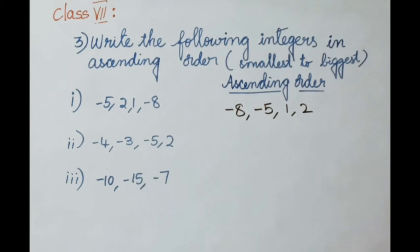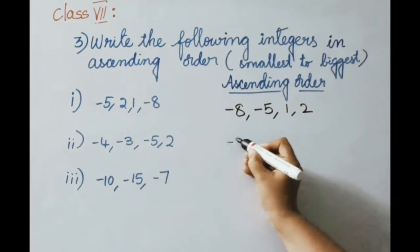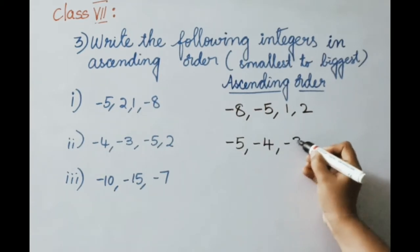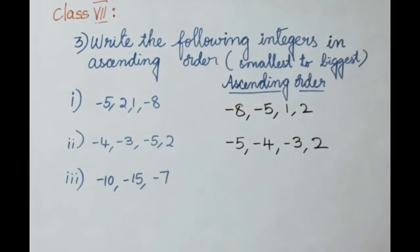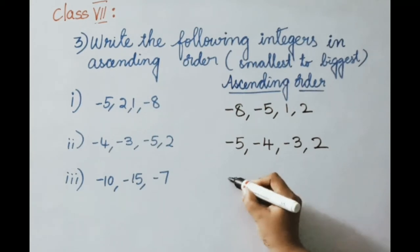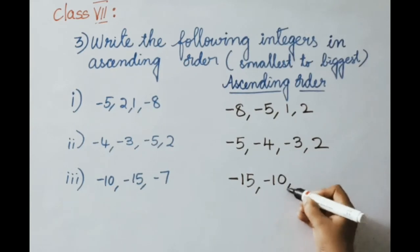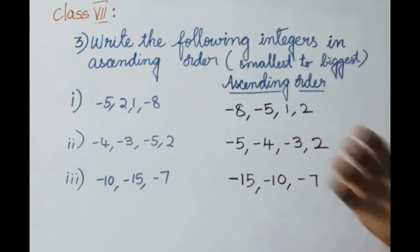See the second set. On the number line, which number comes first? Among all the negative integers, minus 5 comes first — it is the smallest. Then minus 4, then minus 3, then 2. That is the ascending order. For the third set, from left to right, minus 15 comes first, then minus 10, then minus 7. That is the ascending order.